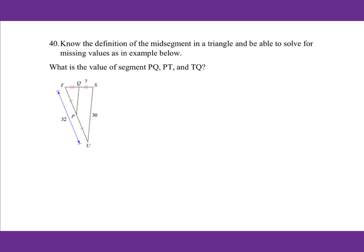For number 40, PQ is a midsegment. Since Q is the midpoint of TS, if this segment is 7 then the other half is also 7. Since P is the midpoint of TU, this side equals 16. The midsegment equals half of 30, which is 15. So PQ equals 15, PT equals 16, and TQ equals 7.